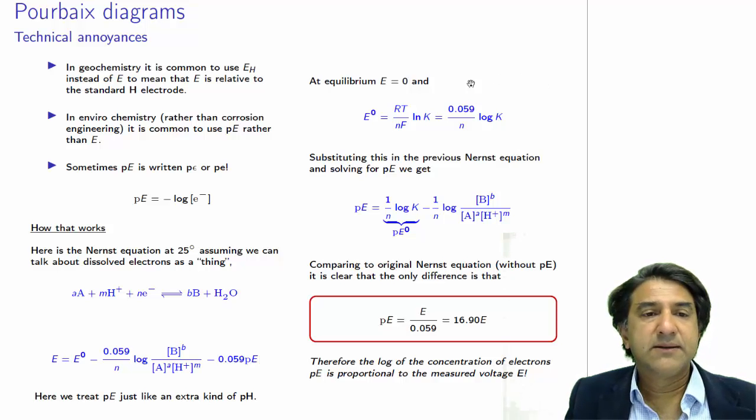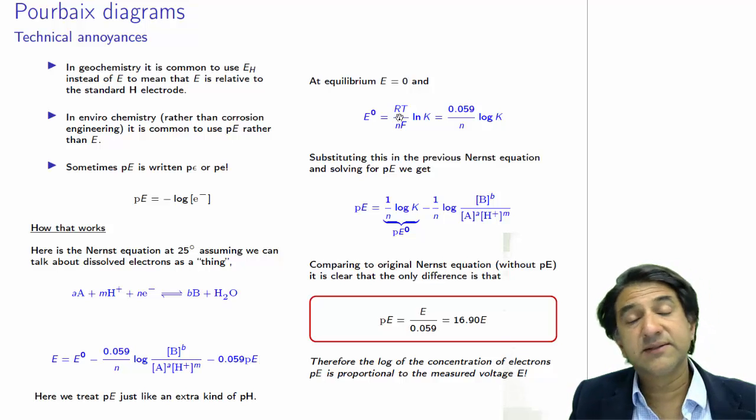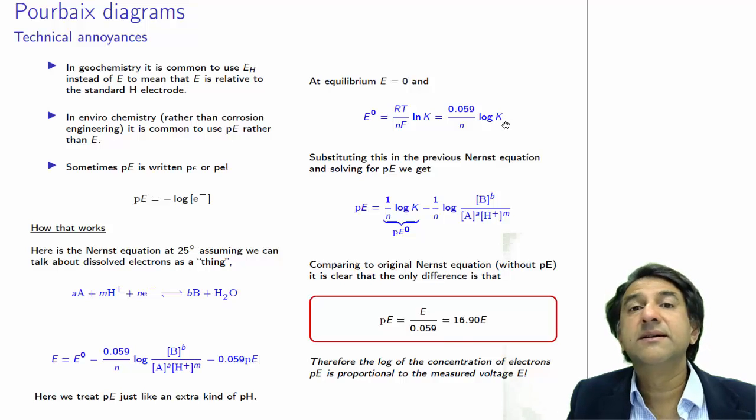Now, at equilibrium, delta G is 0, which implies E equals 0. So we can set this E equal to 0. And then we know from thermodynamics that E0 is equal to RT on NF, LNK. Or if we're using log base 10, and putting in the Faraday constant, 96,500, and the gas constant, and the temperature 25 degrees, if we plug those in, we'll get, and base 10, we'll get 0.059 divided by N times log 10K. So that's E0. Fine. We know that.